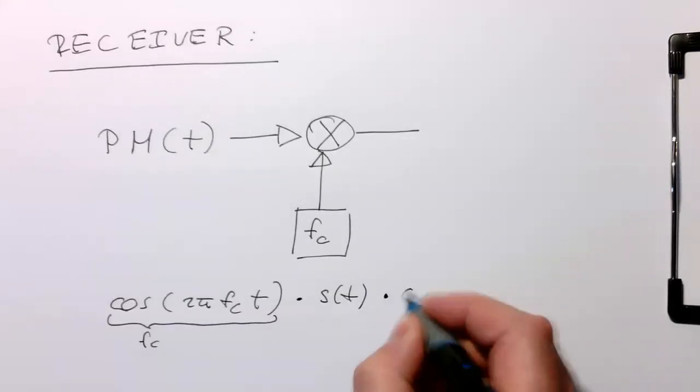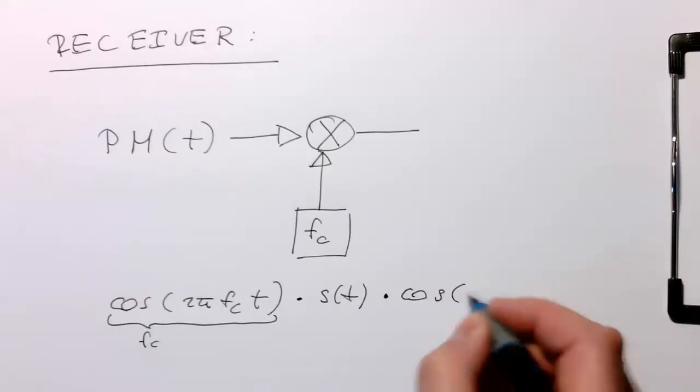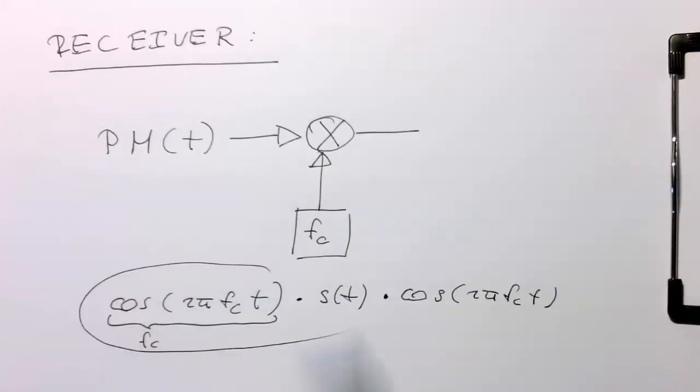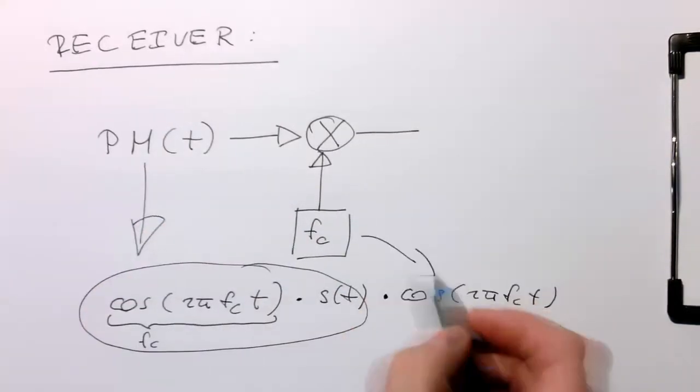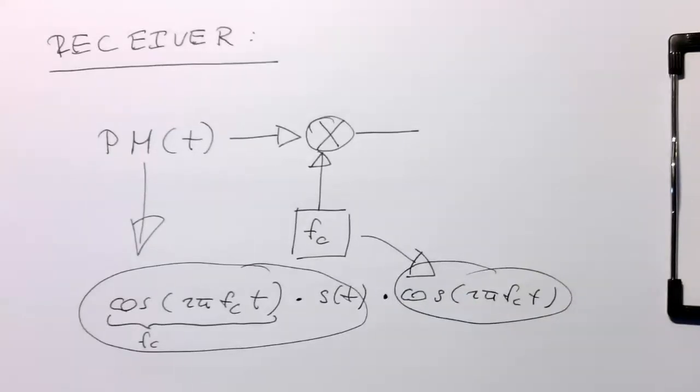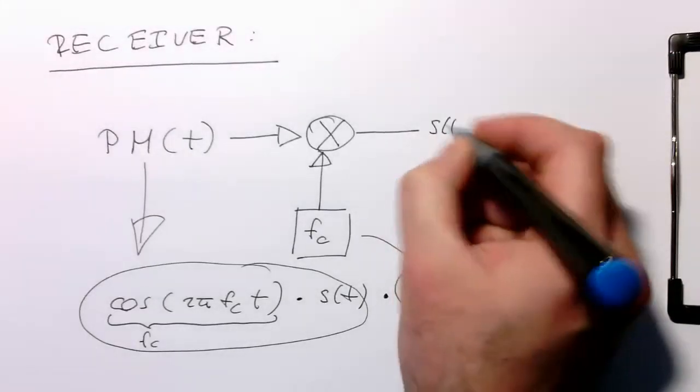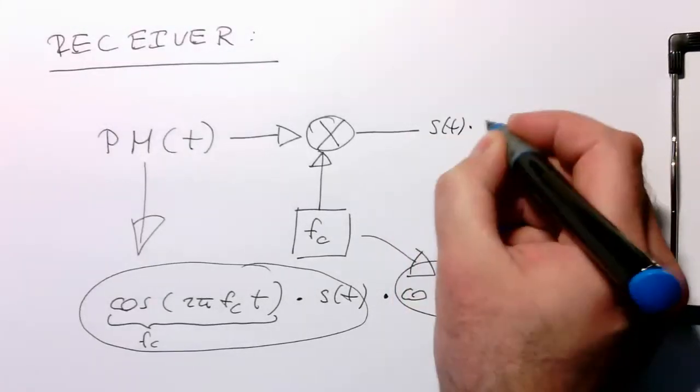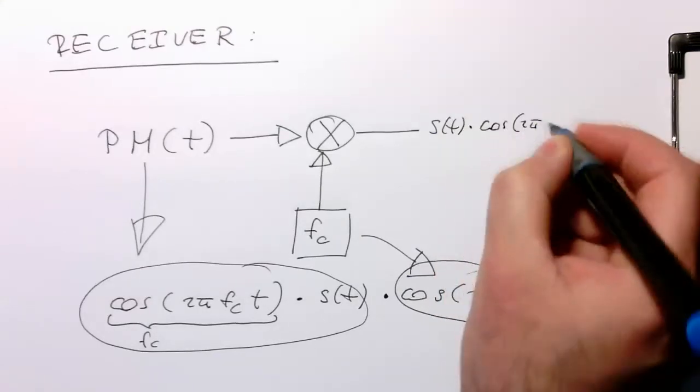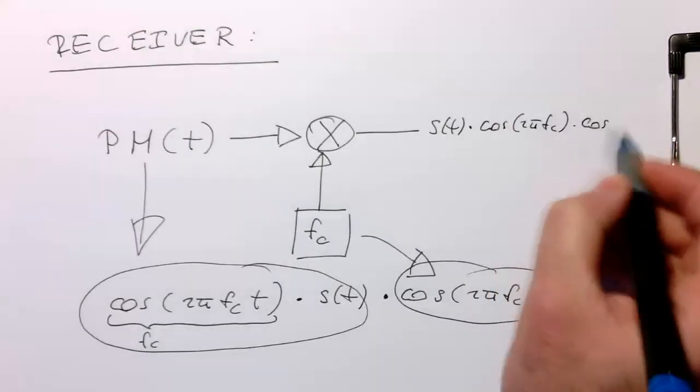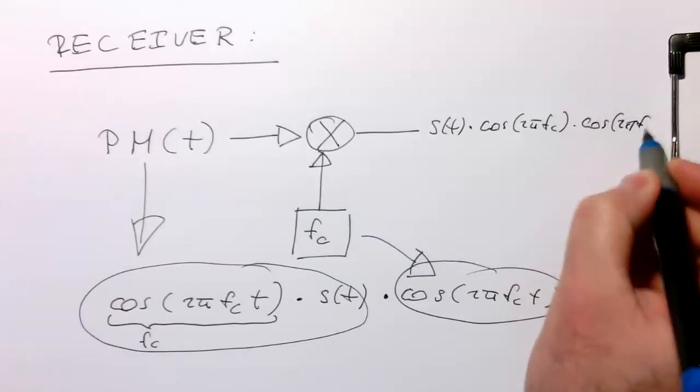We multiply this again with cosine 2π fc t. This is our signal PM(t), and we multiply it with this term. The result at the output is s(t) multiplied by cosine 2π fc t, then multiplied again with cosine 2π fc t.